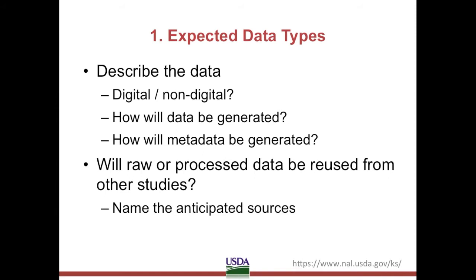We begin our plan by outlining expected data types. This section covers what you will produce. Describe the type of data — for example, digital or non-digital — and how they will be generated. Different methods include lab work, field work, surveys, custom software, and so on, that should be specified. What kind of metadata will be generated, and how? Will metadata be manually entered, or automatically generated by the data collection method? Following a specific community-approved metadata standard consistently is encouraged to facilitate wider understanding and reuse of the data, and the specifics of the standards used will be covered in the next section.